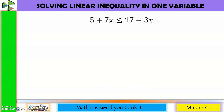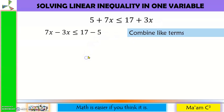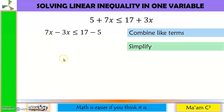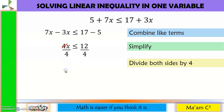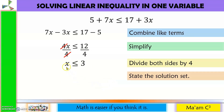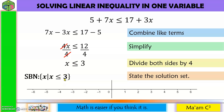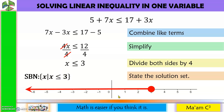Another example: first combine like terms. 7X minus 3X is 4X, and 17 minus 5 is 12, giving 4X ≤ 12. Divide both sides by 4: X ≤ 3. Set builder notation: the set of all X such that X is less than or equal to 3. For the graph, 3 is included so we use a shaded circle, and the inequality points left toward negative infinity. Interval notation: (−∞, 3].